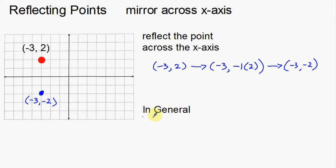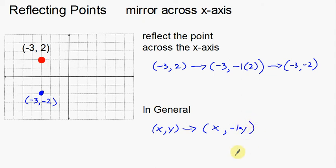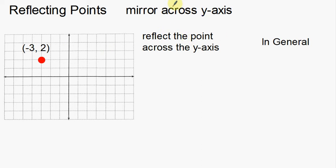In general, for any point, if I want to reflect across the x-axis, I take my x, y coordinates and I leave the x-coordinate alone — I'm not going to do anything to that. But I take the y-coordinate and multiply it by a negative one. That's how I flip points across the x-axis. You can also think of it as just changing the sign — going from a positive two to a negative two.